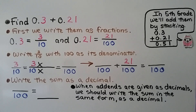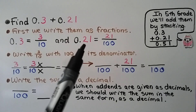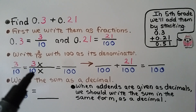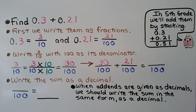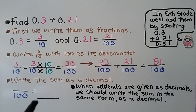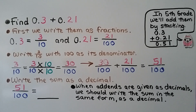Now our addends are decimals, and we need to find 3 tenths plus 21 hundredths. First we write them as fractions. 3 tenths as a decimal is written as 3 for a numerator and 10 as a denominator, and 21 hundredths would be 21 for a numerator and 100 for a denominator. We need to write 3 tenths with 100 as its denominator, so we multiply both the numerator and denominator by 10. 3 times 10 is 30, so now we're adding 30 hundredths plus 21 hundredths, which equals 51 hundredths. When the addends are given as decimals, we should write the sum in the same form as a decimal, so we need to turn 51 hundredths into a decimal.